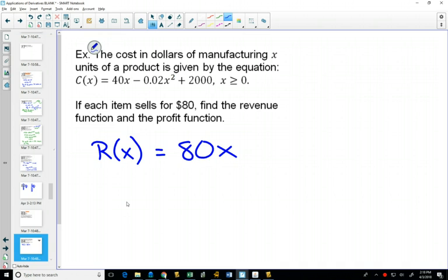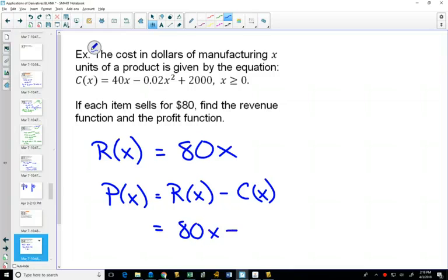Profit is how much money you actually make, so your profit function is actually your revenue minus your cost. So P(x) = R(x) - C(x) in function notation.